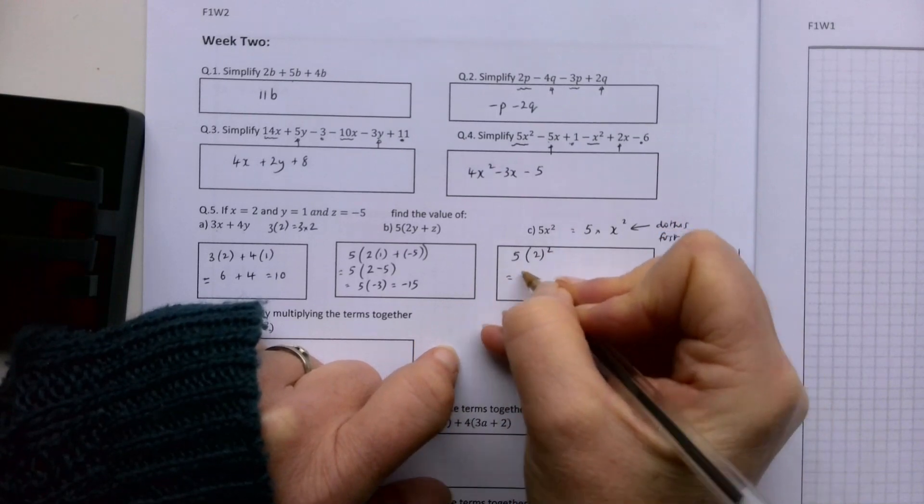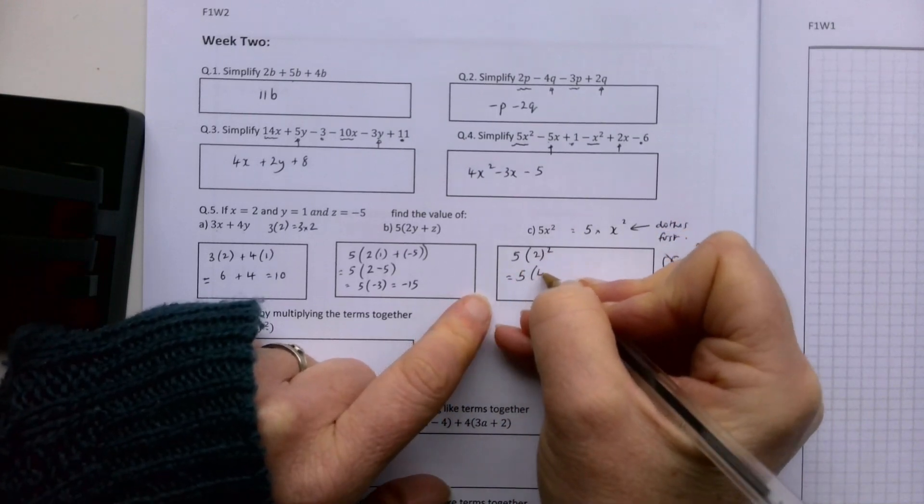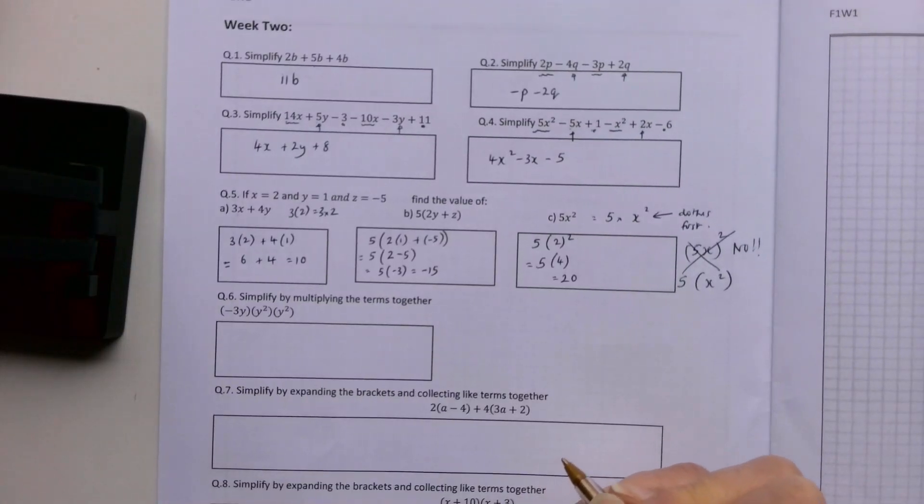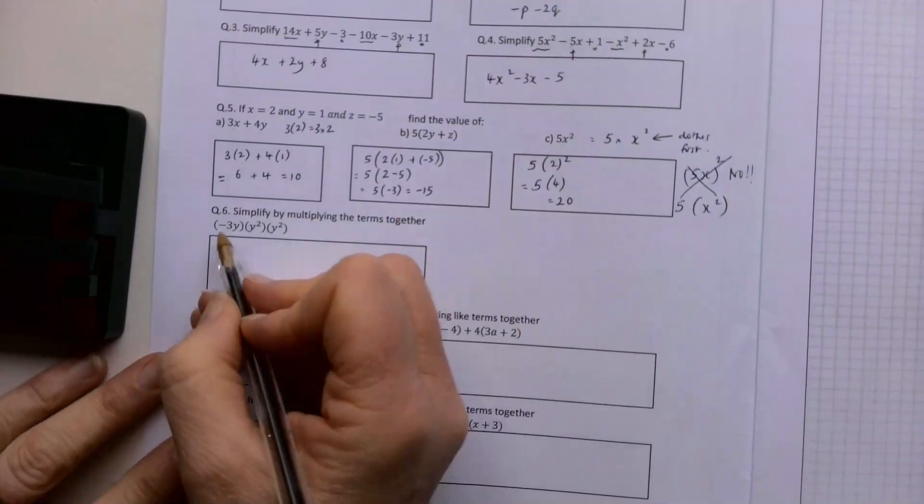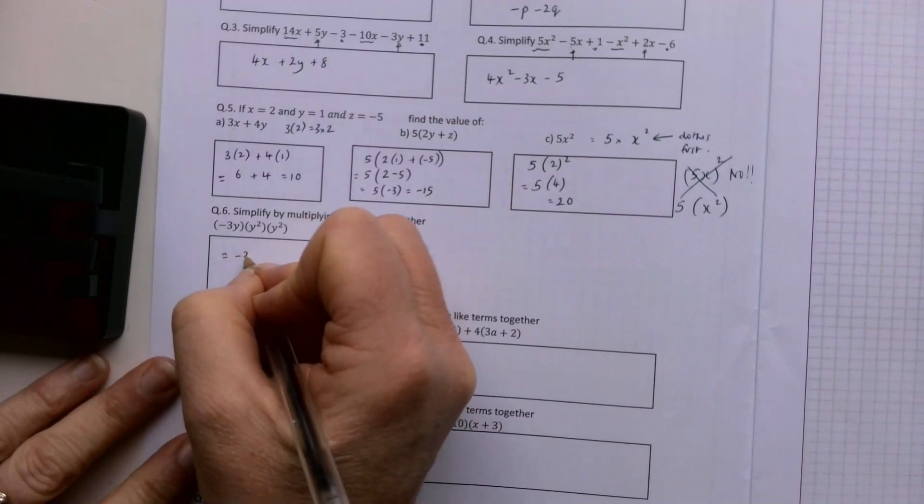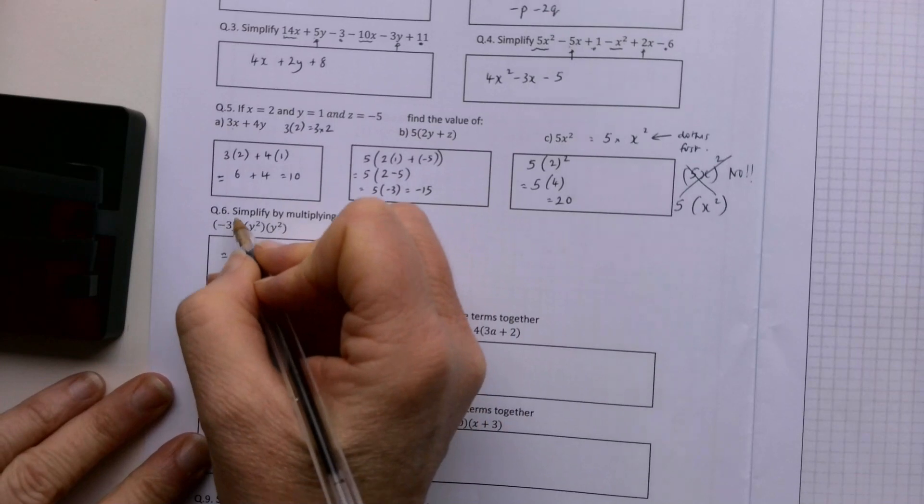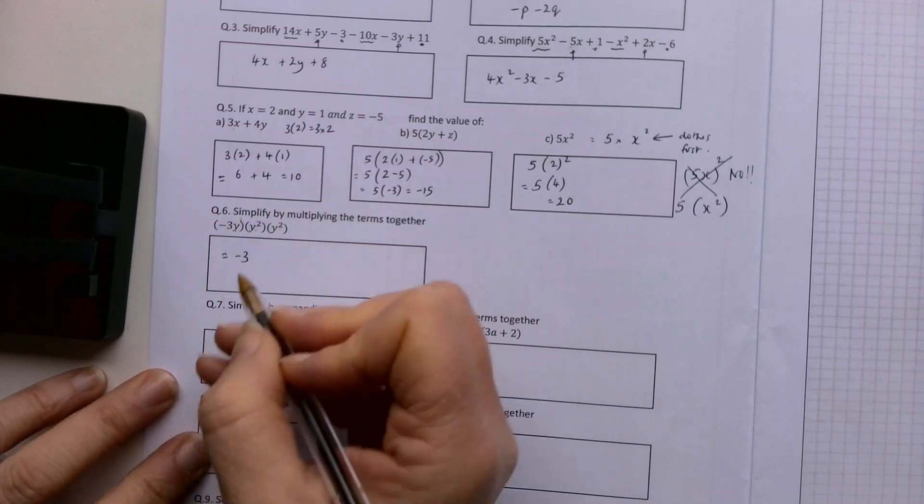Simplify by multiplying the terms together. I've got a minus 3, and then I have y by y squared by y squared. Remember that y has kind of got a little 1 up there, so 1 plus 2 plus 2 is 5. So minus 3y to the power of 5.